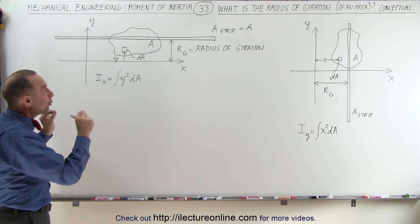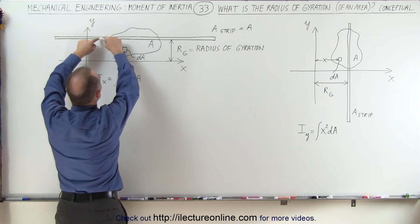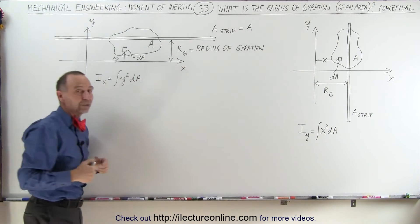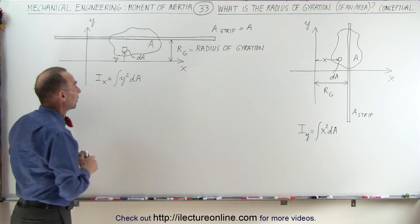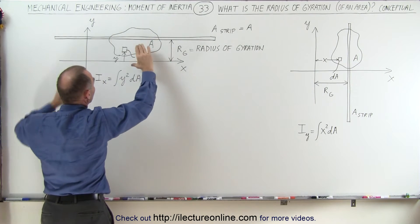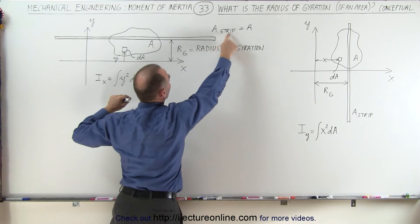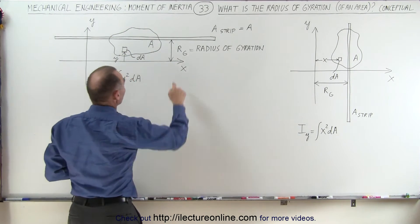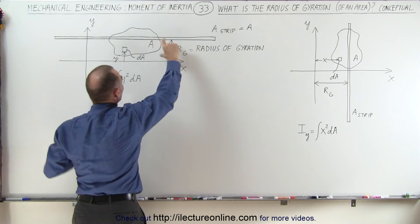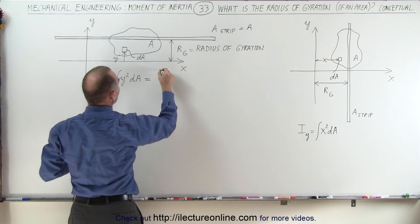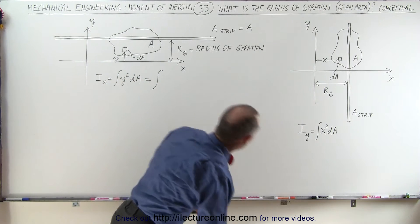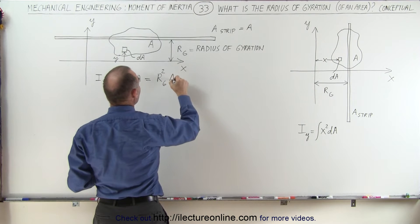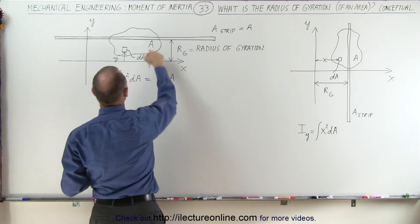So we can define the radius of gyration as the distance we would have to place an equivalent area in the shape of a very thin strip away from the axis of rotation — the axis to which we're trying to find the moment of inertia. We take the area of the drawn figure, make it into a thin strip so that the area of the strip equals the area of the drawn figure, and then the moment of inertia will be equal to the radius of gyration squared times the area. Since we have a thin little strip, this simply becomes R_G² times the area of the strip, which equals the area of the drawn figure.